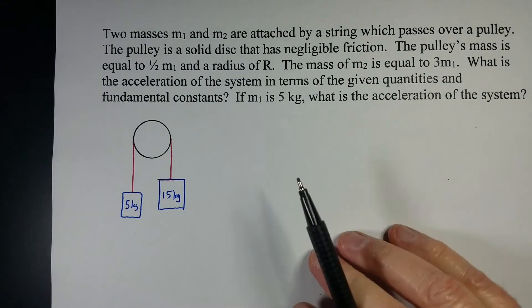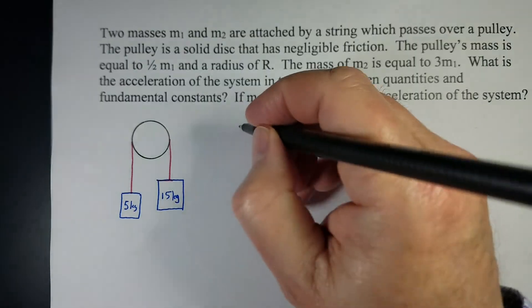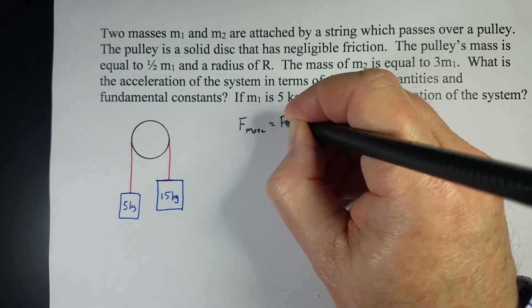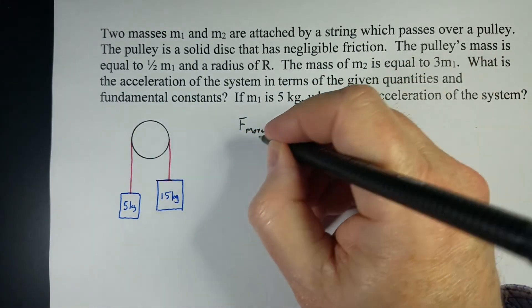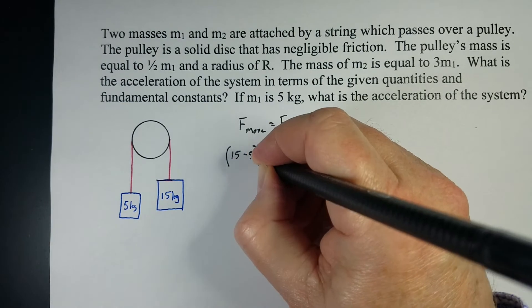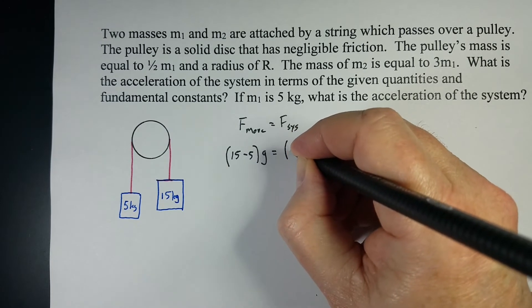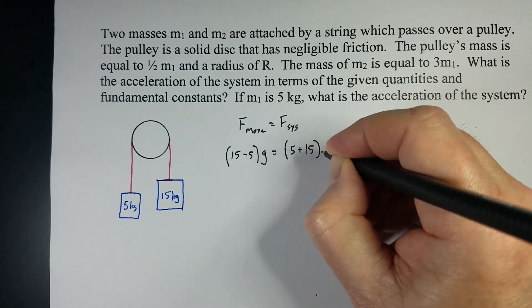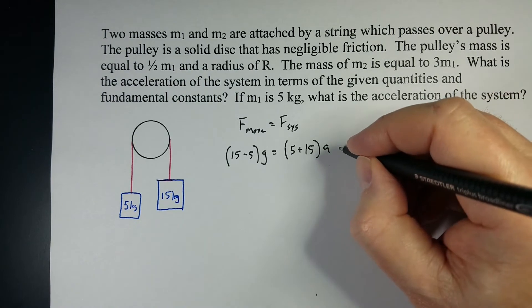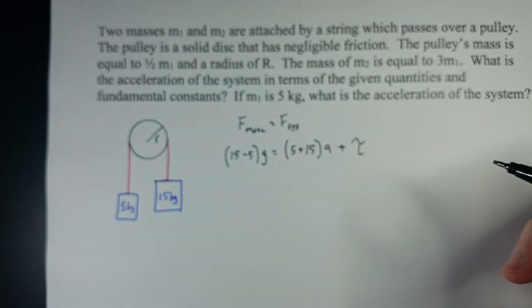Here's the same question. Except this time, I'm actually going to substitute in the masses. We're going to start off the same way. Force that's making it move equals the force on the system. What's making it move is the difference in the two weights. So we have 15 minus 5 times G. That's the difference in the two masses, and the total mass. But we also got this torque from the pulley that we have to deal with.